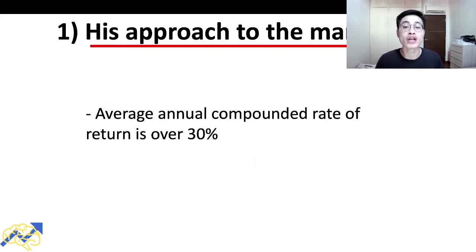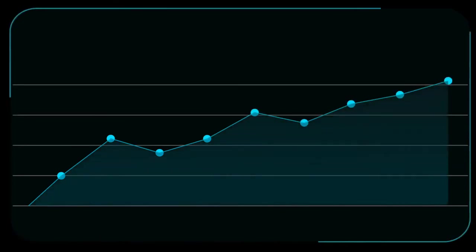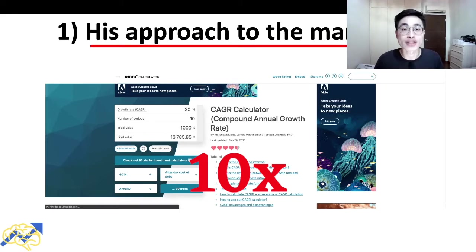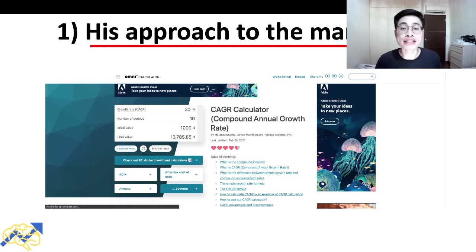Larry Hyde managed to achieve an average annual compounded rate of return of over 30%. At first glance, 30% might not seem huge, however if compounded it can grow capital significantly. For example, starting with $1,000 at 30% annual return compounded over 10 years, your capital would become $13,785 — more than 10x — without adding any further capital. That is the power of compounding and a consistent growth rate.